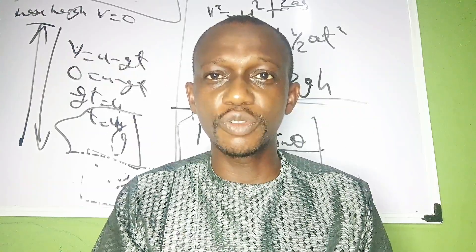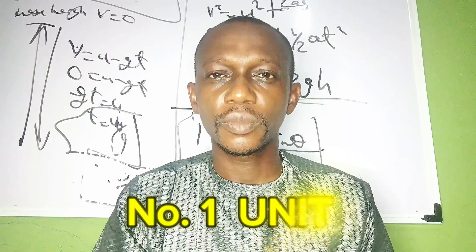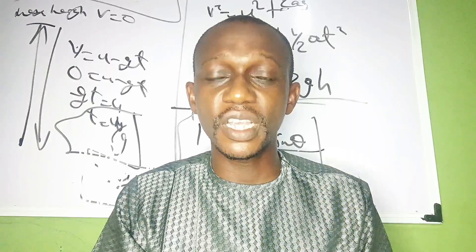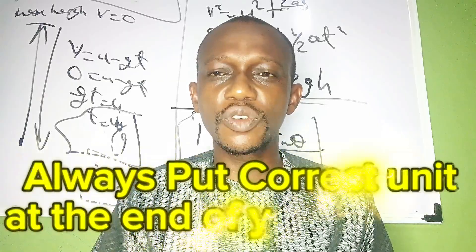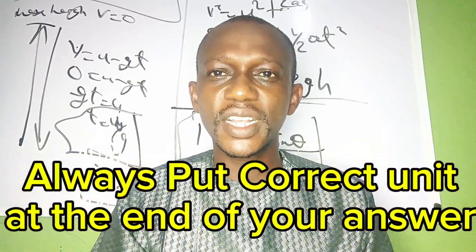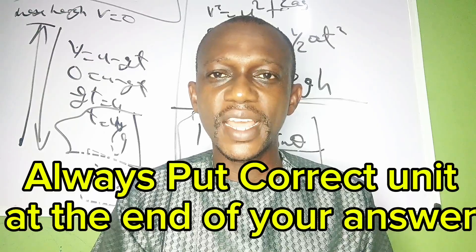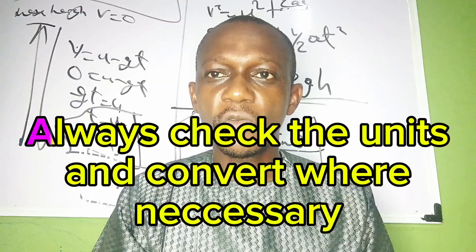In this video today, I will tell you the 8 errors. The first one in terms of physics is UNIT. If you are writing this WAEC, you have to be careful of UNIT. I will be talking about 3 categories in terms of UNIT. The first category is that students carelessly skip UNIT at the end of their answer.